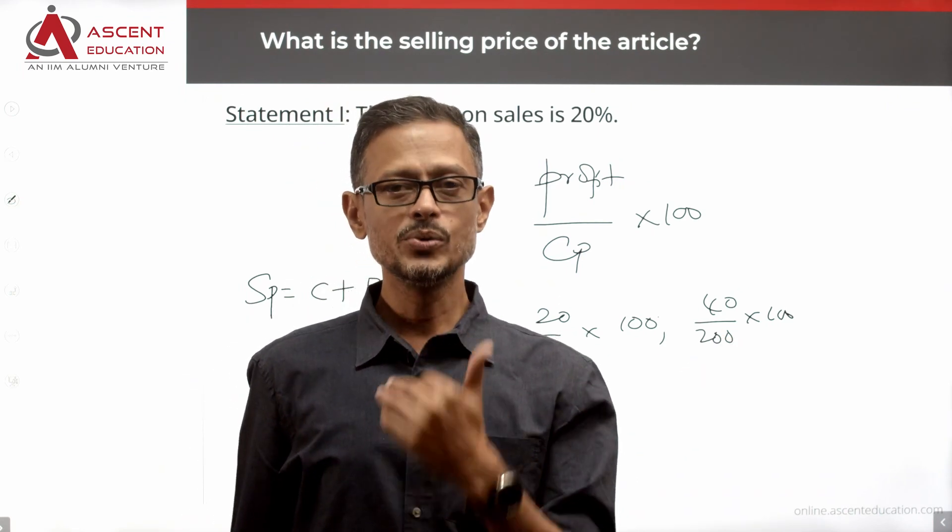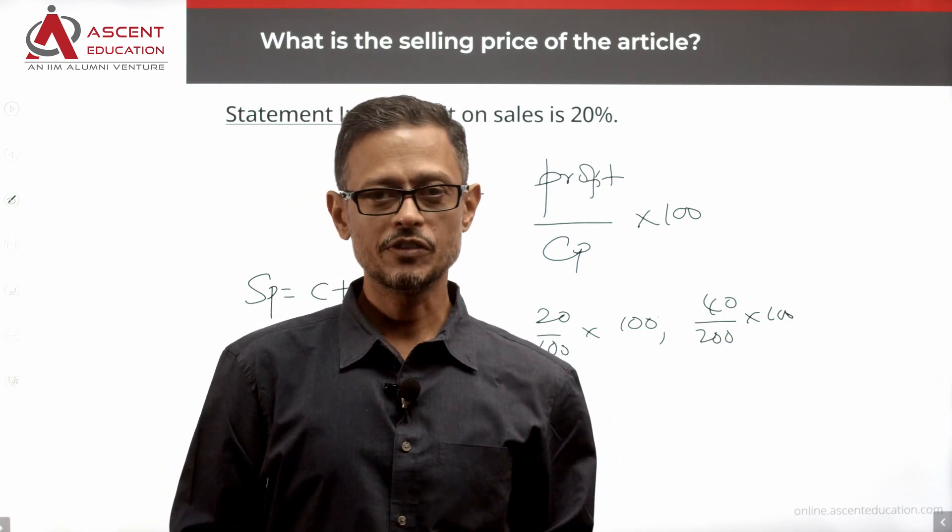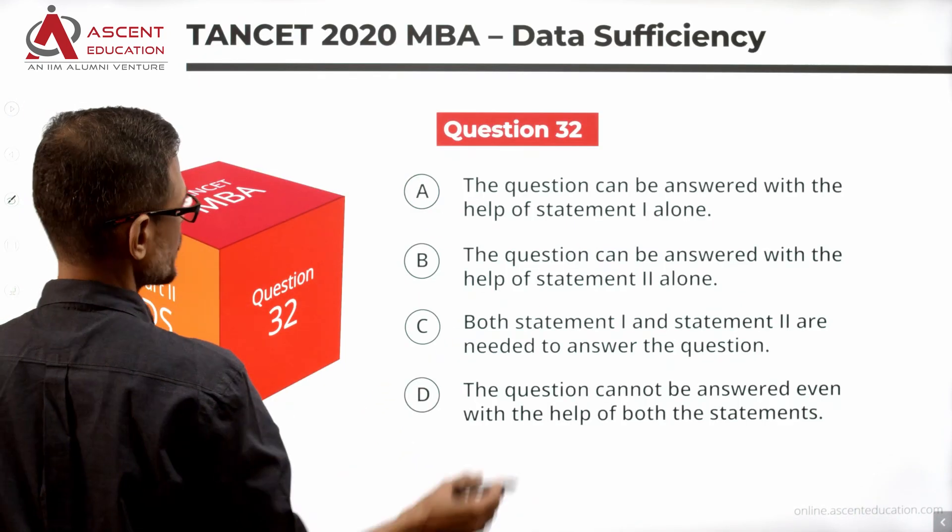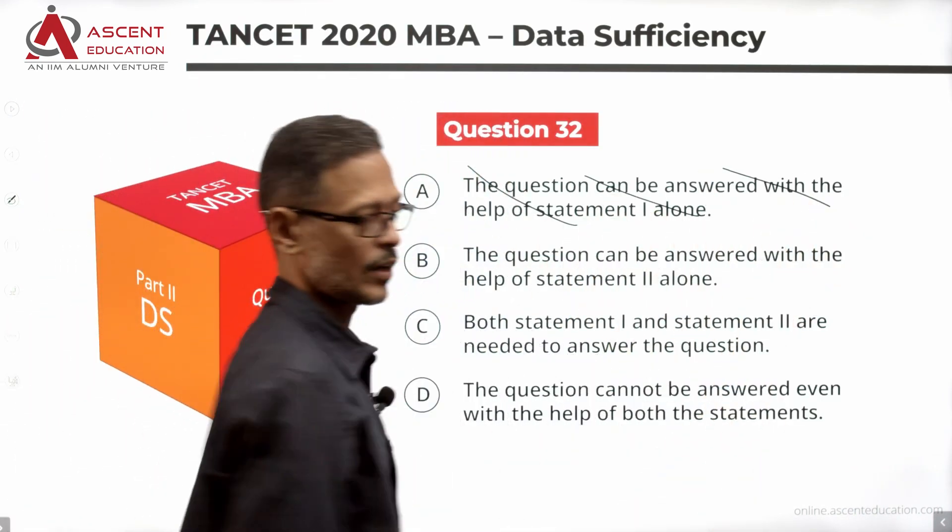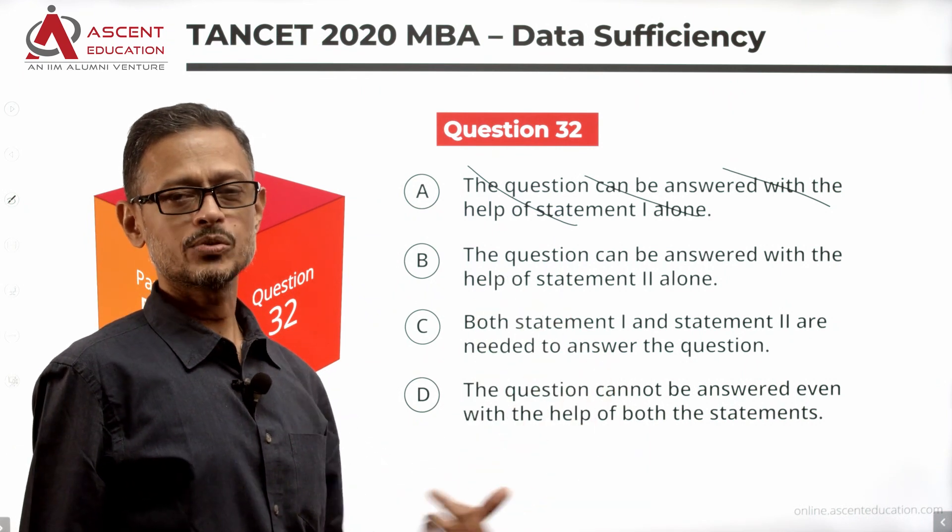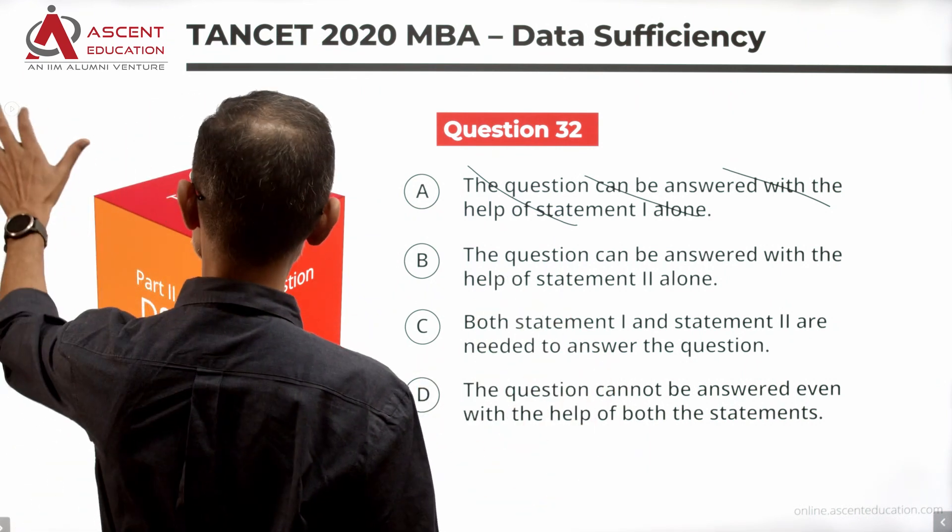So we will not get a unique value just by knowing the profit percentage. So statement 1 alone is not sufficient. Rule out answer option A. So three answer options are left. Evaluate statement 2 to see whether that is sufficient.